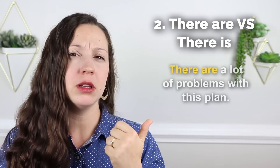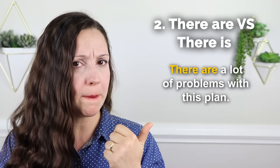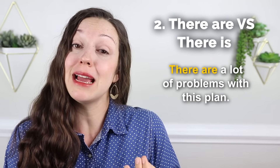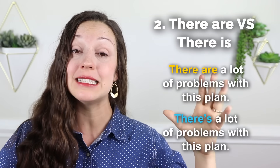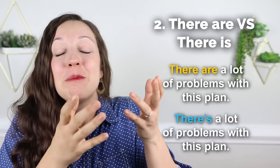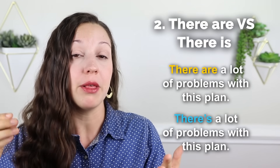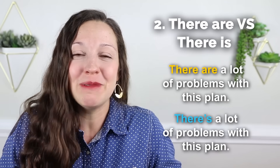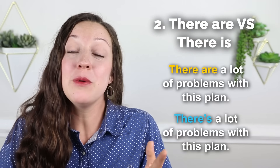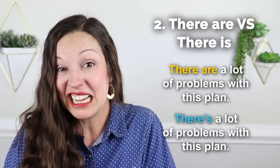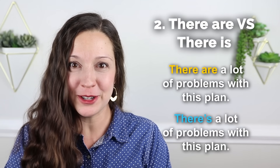Classroom English rule number two that we often break in fluent English. There are a lot of problems with this plan. This is grammatically correct, but in fast conversational English, you're more likely to hear 'there's a lot of problems with this plan' — as a contraction, 'there is.' But this is technically wrong. The word 'problems' is plural, so we need a plural verb: 'there are problems.' But in daily conversation, we will use the contraction 'there's' with a plural object. It's incorrect technically, but it's used all the time in daily conversational English. So I give you permission to use it.